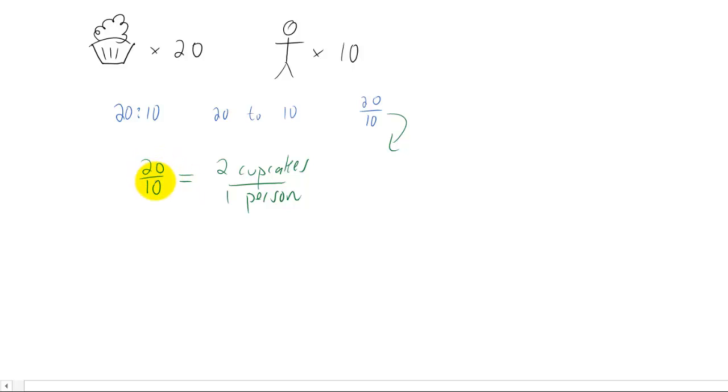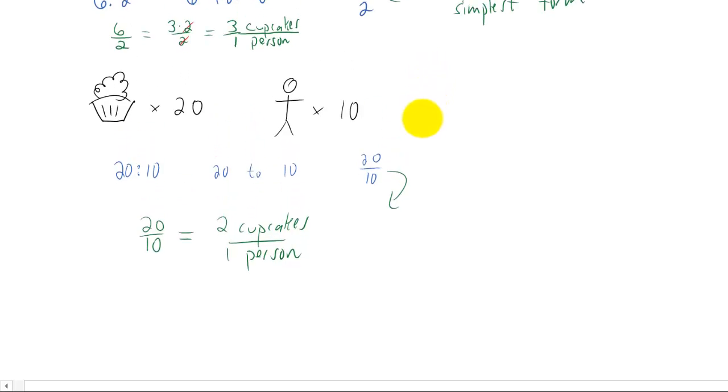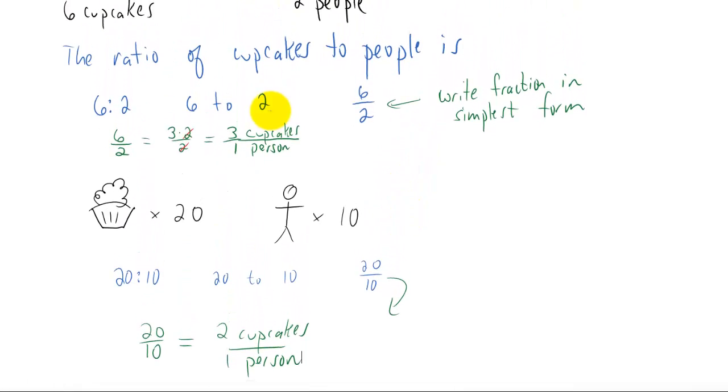What's neat about reducing these ratios to simplest form and actually getting a 1 in the denominator is that now we can compare our 2 scenarios. Let's go back up. In our last scenario, we ended up finding out that we had 3 cupcakes per person. And in our party scenario, we found out that we have 2 cupcakes per person.